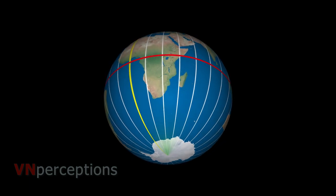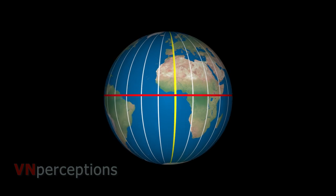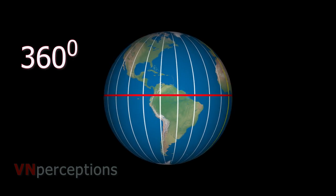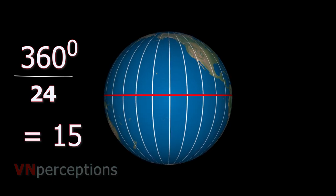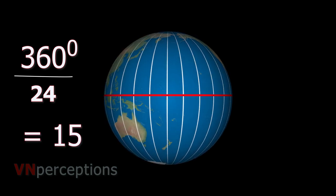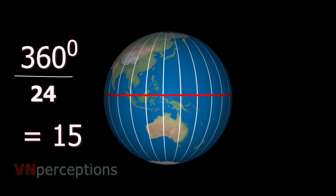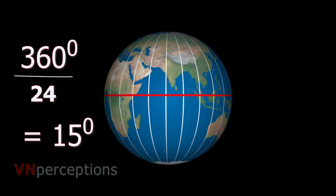In one hour, how much will it travel? It is 360 divided by 24. The answer is 15. That means the earth rotates 15 degrees in one hour.